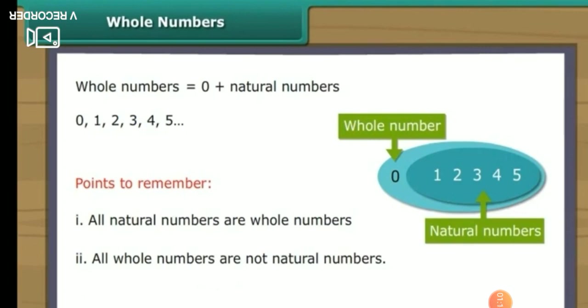For example, whole numbers are 0, 1, 2, 3, 4, 5 and so on. It represents whole numbers and is denoted by capital W. So natural numbers are counting numbers, while whole numbers are natural numbers including zero.